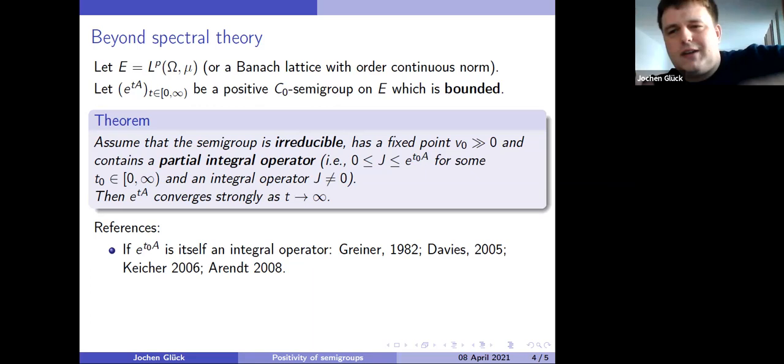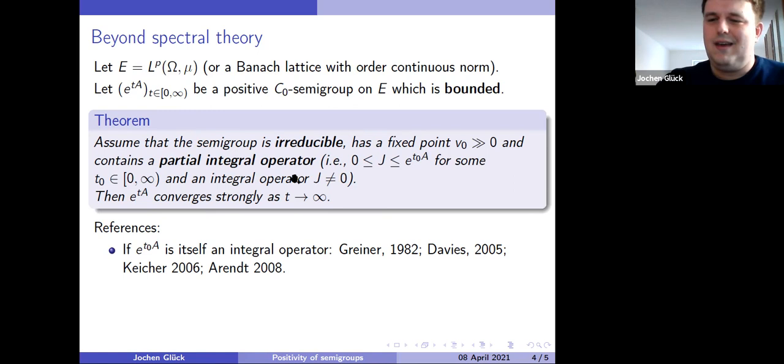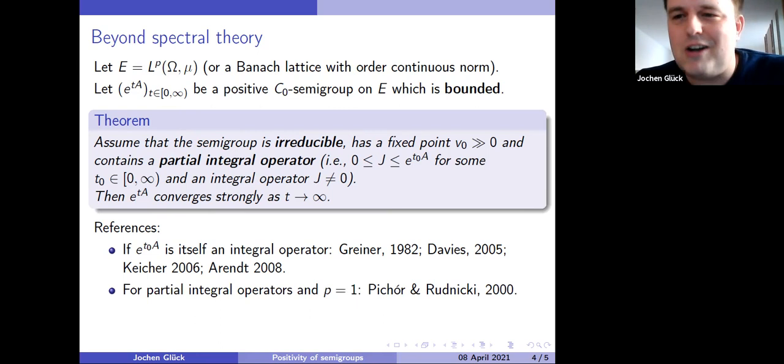Now I'm not sure whether Richard Rudnicki is here today, but for partial integral operators, in the case P equals one, this was proved by Katarzyna Pichór and Richard Rudnicki in 2000, with particular applications in mind. So this case, where we have a partial integral operator on L1 space occurs very frequently in mathematical biology. This happens very often. For instance, if you have a semi-group generator and perturb it by an integral operator, then you can use the Dyson-Phillips formula for the perturbed semi-group and get the perturbed semi-group is a partial integral operator. And in the very general case, it was proved by Moritz Gerlach in Ulm 2015.